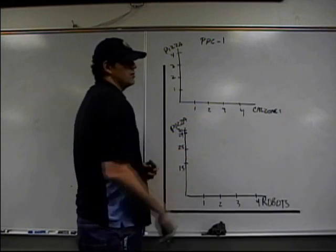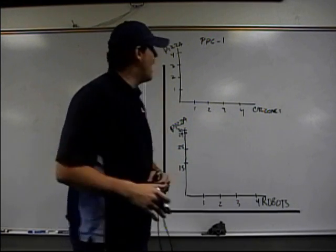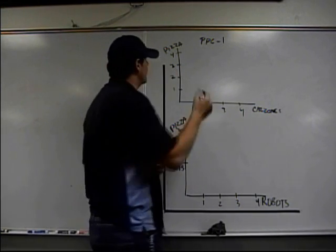Notice pizza and calzones. Calzones are like a pizza that's folded in half. The resources are identical. So take a look.